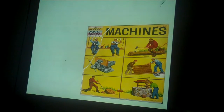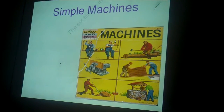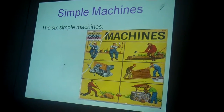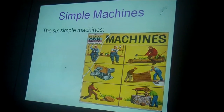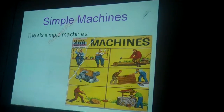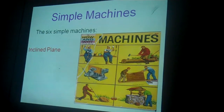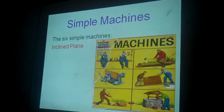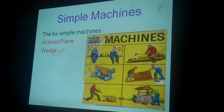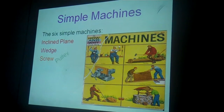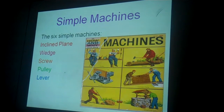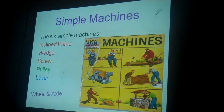Simple machines. Simple machines produce work to make it easier. And the six simple machines are inclined plane, wedge, screw, pulley, lever, and wheel and axle.